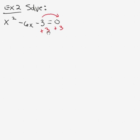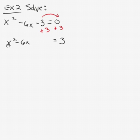Let's start this process by taking the constant and moving it to the other side so it's the only thing there. That gives us x squared minus 6x equals 3. Think back to Chapter 4 and the work we did with perfect square trinomials. The first step is it would have to be a trinomial, which I don't have on the left side, but I can add something to the left side as long as I add it to the right side too. The question is: what would I want to add to make it a perfect square trinomial?